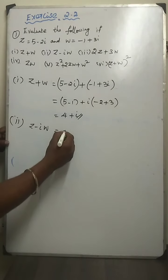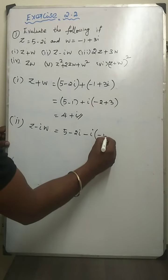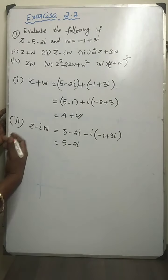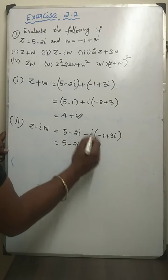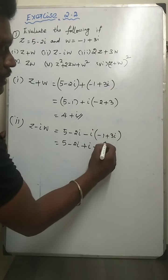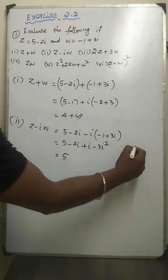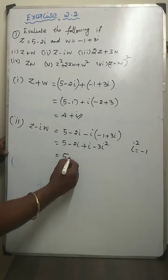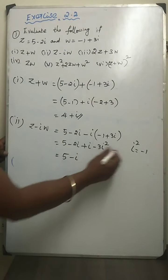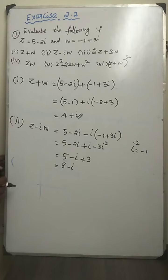Second subdivision: z minus iw. z is 5 minus 2i, minus i times w which is minus 1 plus 3i. Distributing i: minus i times minus 1 is plus i, and minus i times 3i gives minus 3i squared. Since i squared equals minus 1, that becomes plus 3. So we get 5 plus 3 equals 8, and minus 2i plus i equals minus i. The answer is 8 minus i.